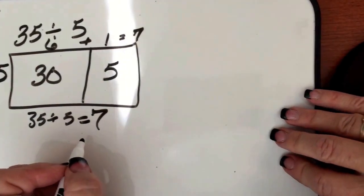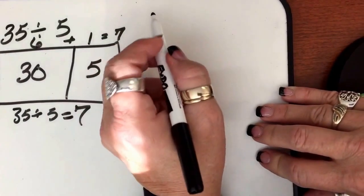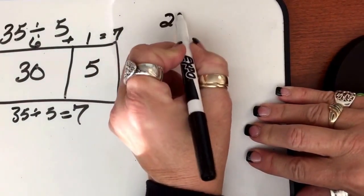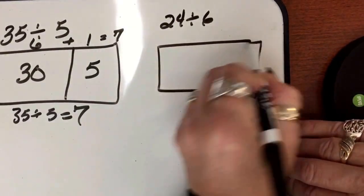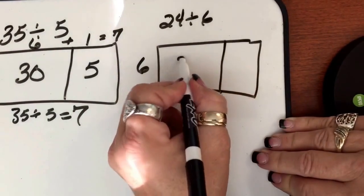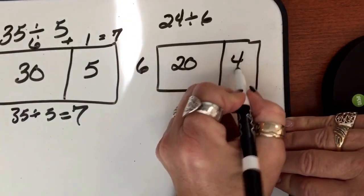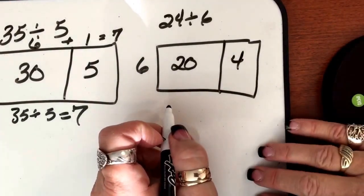Do another one? Here, let me move it over a little bit. Let's do 24 divided by 6. So again, we're dividing by 6, and what do we have? 20 and 4. Now this is where you're going to have to think this one through.